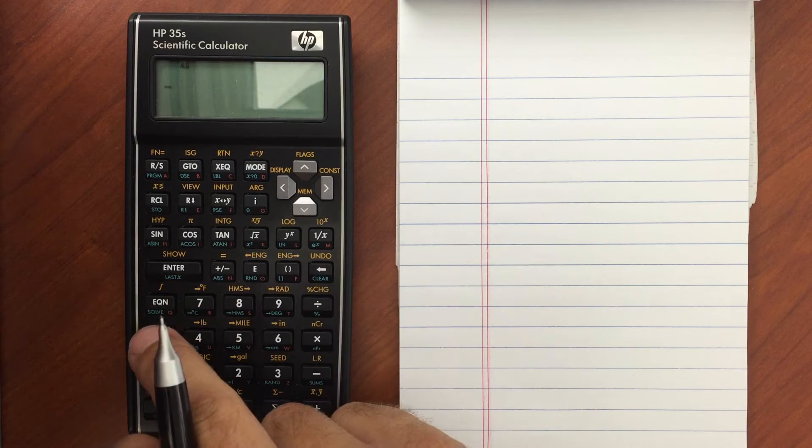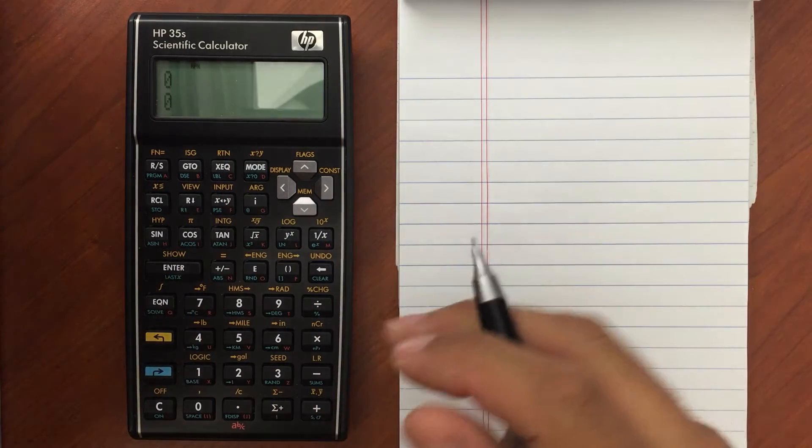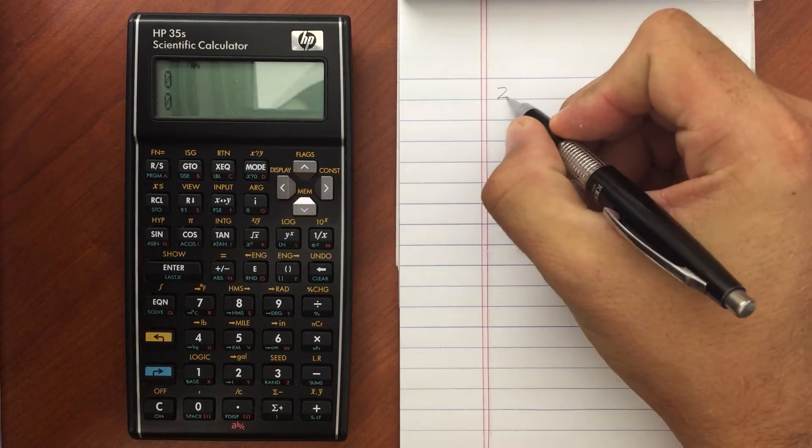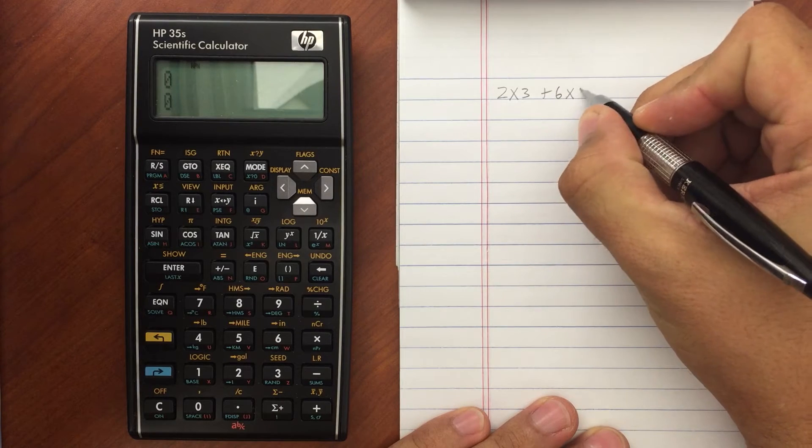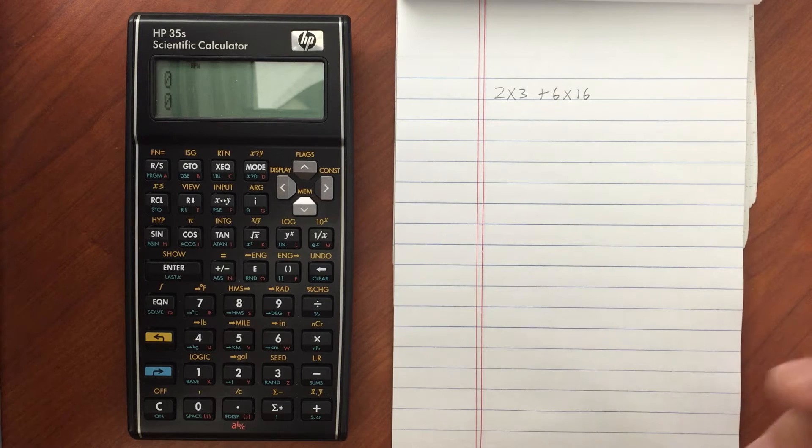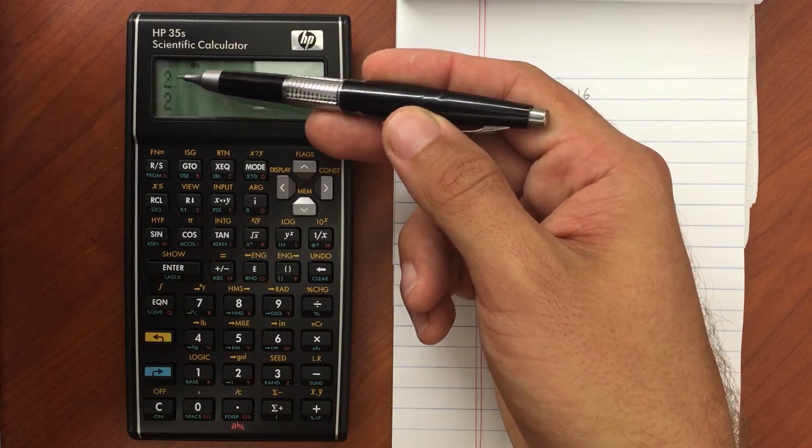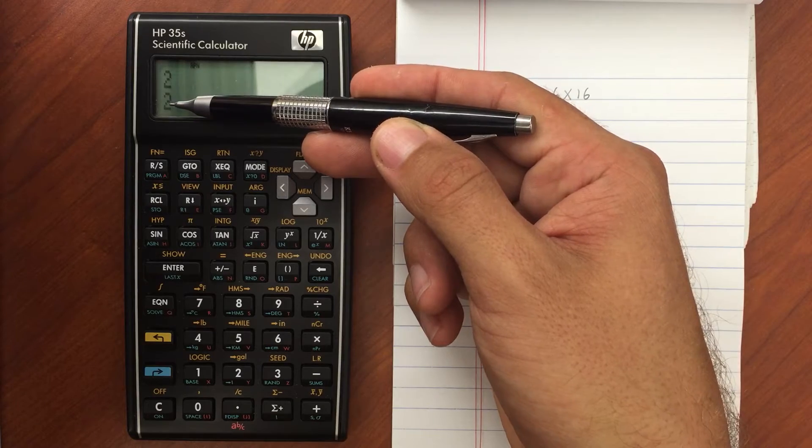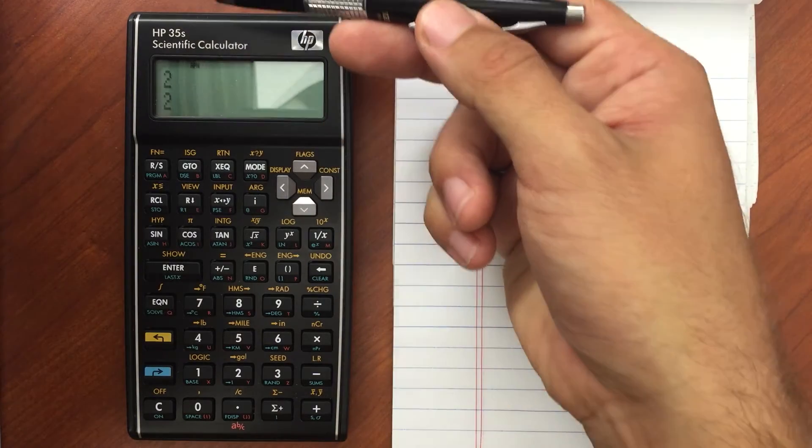In reverse Polish notation, that would be done - let's see if we do 2 times 3 plus 6 times 16. You'd put in your 2 first, and then hit enter. And you'll see that that bumped it up in the stack here. This is what's called the stack. This is your X register, this is your Y register, and then there's 2 more, a Z and a T register.